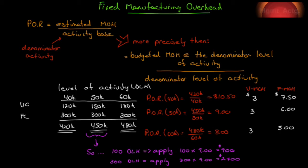We're going to move on to our last cost category of manufacturing costs — fixed manufacturing overhead. If you recall, when we calculated the predetermined overhead rate, we used our estimated annual manufacturing overhead costs and divided it by an activity base, such as direct labor hours or machine hours. From here on, we'll refer to that activity base as the denominator activity.